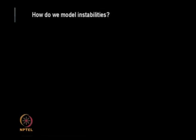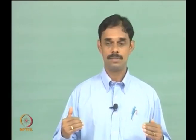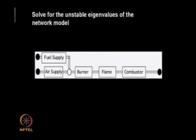In practice, combustors are analyzed using network models. A typical combustor system has components — fuel supply, air supply, burner, flame, combustor — and you write input-output transfer functions for each element. These are assembled into a series of linear equations. We solve for the eigenvalues of the network model. If the eigenvalues are complex, we look at the imaginary part to determine if the combustor is unstable or stable.